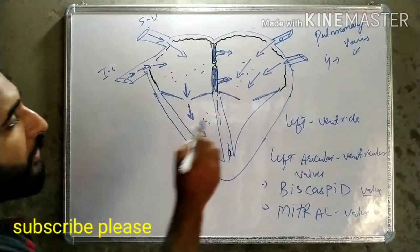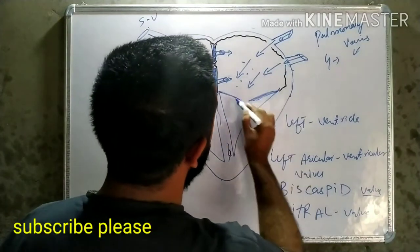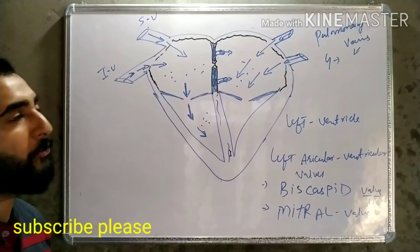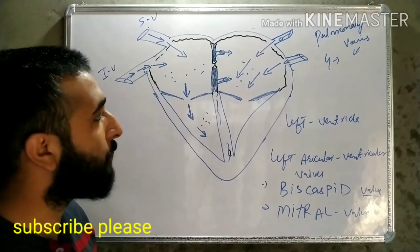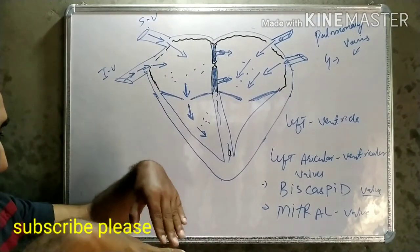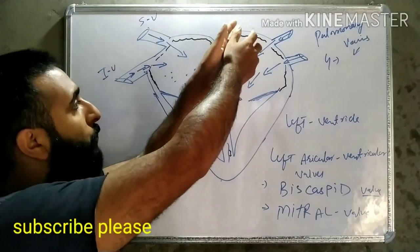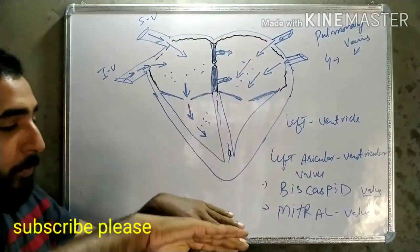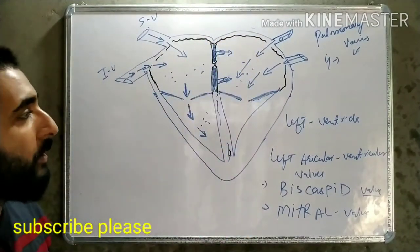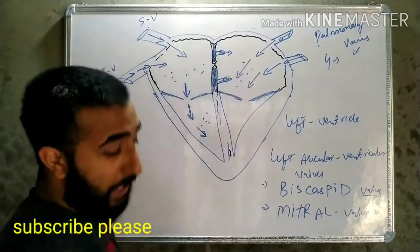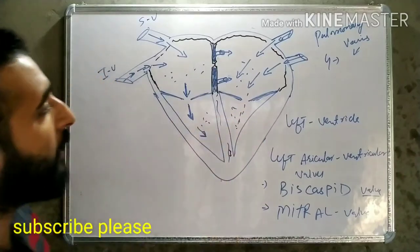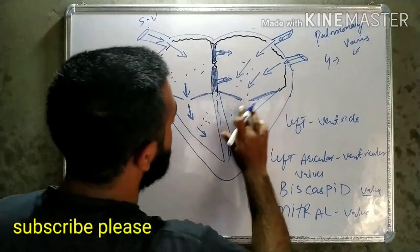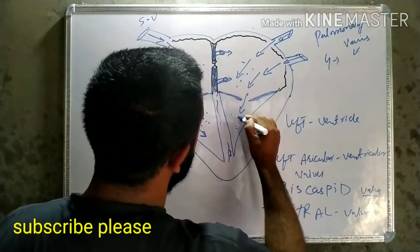This oxygenated blood is regulated by the bicuspid or mitral valves. These valves work in the same way - when the pressure exceeds here in the left atrium, these valves open automatically, and the blood comes from the left atrium into the left ventricle. Pulmonary veins bring oxygenated blood here because the function of veins is to bring blood towards the heart.